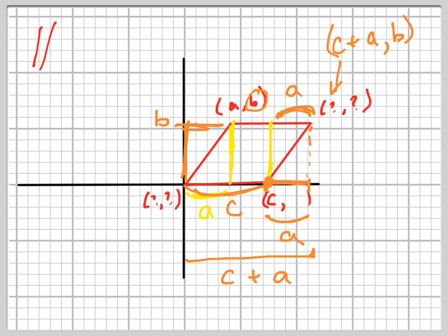Tell me what this point would be right here. Which point? This point right here. That's A, right? No, that's C. That's C. So it's C comma what? B. Zero.